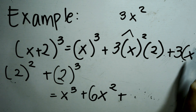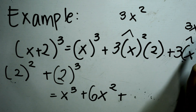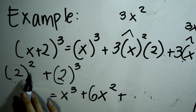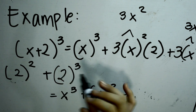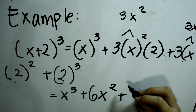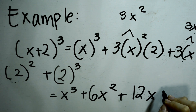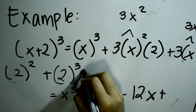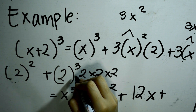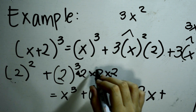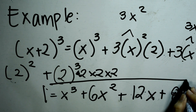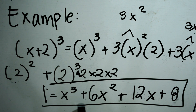Plus 3 times 2, then 2 squared equals 4, so 4 times 3x equals 12x. Lastly, the cube of the last term: 2 times 2 times 2 equals 8. So, your final answer will be x cubed plus 6x squared plus 12x plus 8.